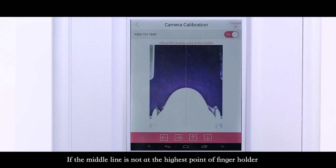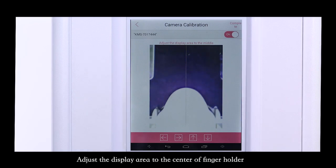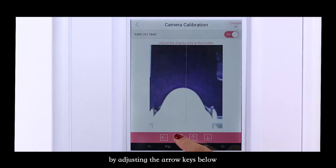If the middle line is not at the highest point of the finger holder, it will indicate that the camera position has a deviation. Adjust the display area to the center of the finger holder by adjusting the arrow keys below.